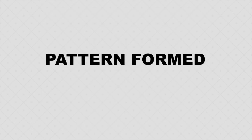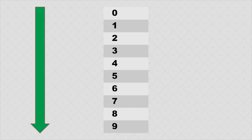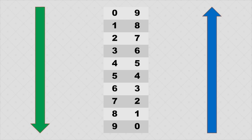Observe the digits of the products in the table. In the tens place, they increase from 0 to 9. And in the units place, they decrease from 9 to 0 when arranged vertically. It is easy to remember this pattern, isn't it?